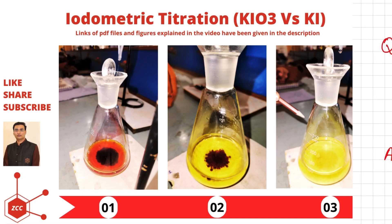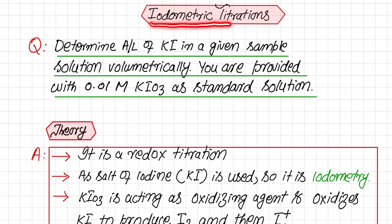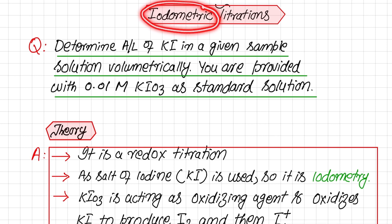Iodometric titrations are those titrations in which iodine is involved. There are two types of titrations: iodometric titration and iodimetric titration. This practical is an iodometric titration.